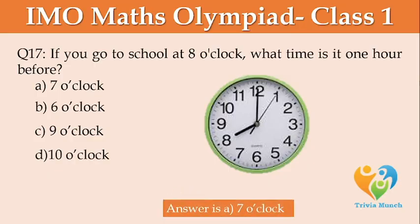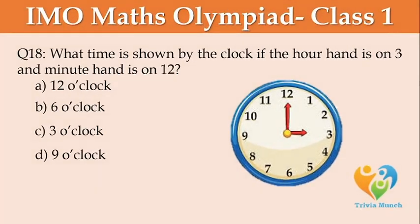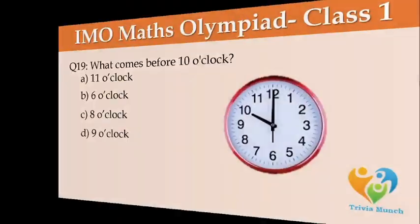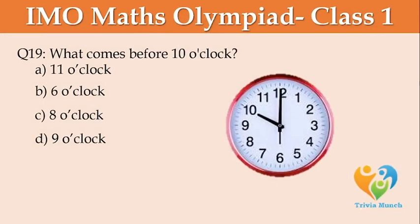What time is shown by the clock if the hour hand is on 3 and the minute hand is on 12? Option A: 12 o'clock, Option B: 6 o'clock, Option C: 3 o'clock, Option D: 9 o'clock. What comes before 10 o'clock? Option A: 11 o'clock, Option B: 6 o'clock, Option C: 8 o'clock, Option D: 9 o'clock.